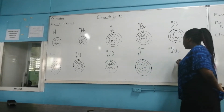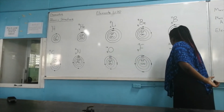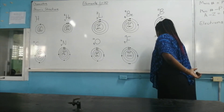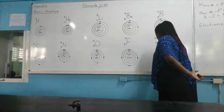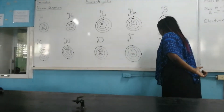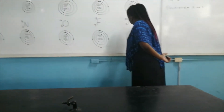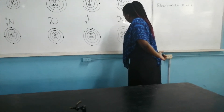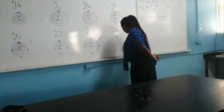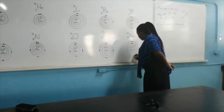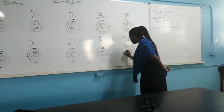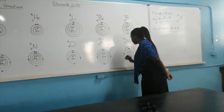Element number 10 is neon, a noble gas. We have ten protons and ten neutrons. The first circle is the nucleus, the second circle is shell number 1 with two electrons — it's full — and then shell number 2 has eight electrons, which means shell number 2 is also full, as it holds a maximum of eight electrons.